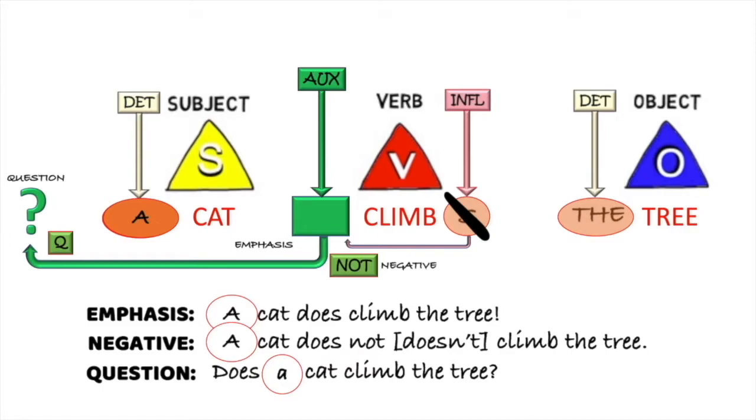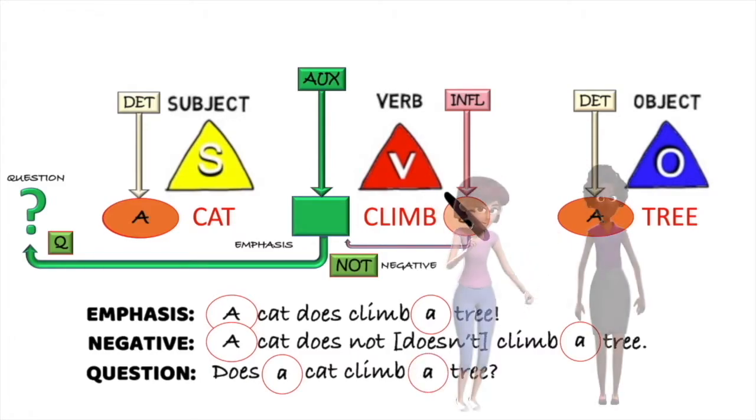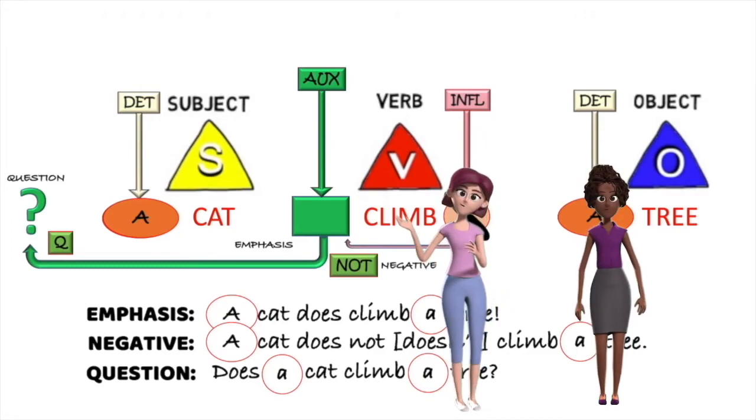And, of course, we can change it from the tree, that is, one particular tree, to a tree, any tree. So we can have a cat does climb a tree, a cat doesn't climb a tree, and does a cat climb a tree? I like the AND A, don't you?